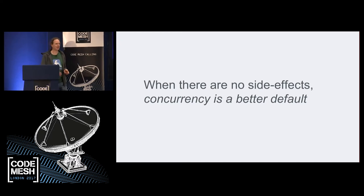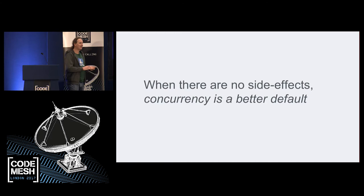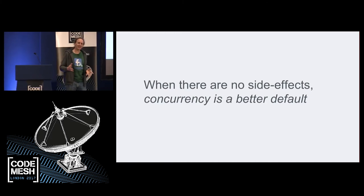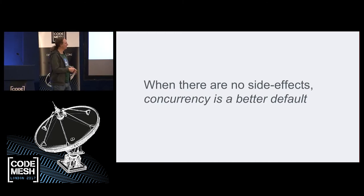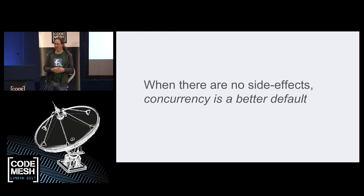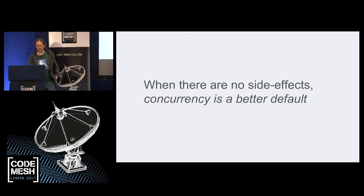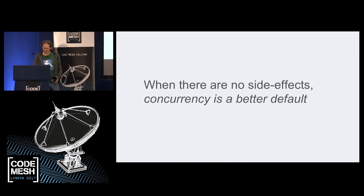The main claim I want to make about concurrency is that in the parts of your program where you're insensitive to things running in a different order — where there are essentially no side effects you're worried about — concurrency is a better default to work with. And I'll give you some illustrations of how that might work.